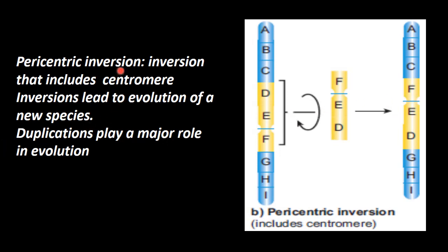This is called paracentric inversion. Inversion that includes centromere, inversion is called paracentric inversion that leads to evolution of the new species. Duplication play a major role in evolution, major role in evolution.